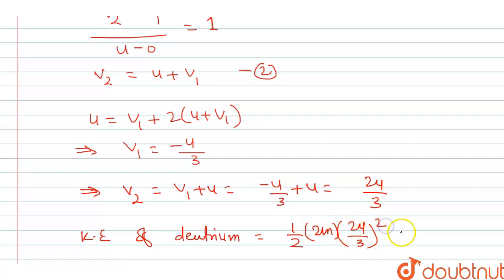Which gives us 4 upon 9. Half into 2m into 2u, the 2s will get cancelled, so 4 squared, 2 squared upon 3 squared, that is 4 upon 9 mu squared. This is the kinetic energy of deuterium.